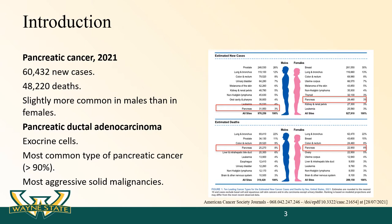Pancreatic ductal adenocarcinoma is a type of exocrine pancreatic cancer and it develops from cells lining small tubes in the pancreas called ducts. More than 90% of all pancreatic malignancies are PDAC, making it the most prevalent neoplastic disease compared to neuroendocrine tumors, acinar and colloid carcinomas.